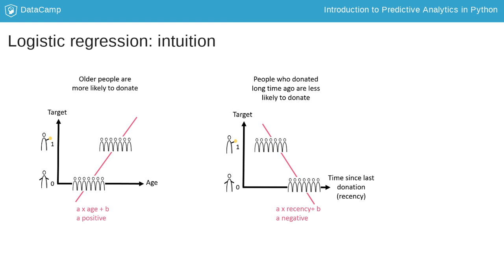If we plot the target as a function of the time since the last donation for each donor, it can be seen that people who recently donated are more likely to donate. In this case, the coefficient of recency is negative.